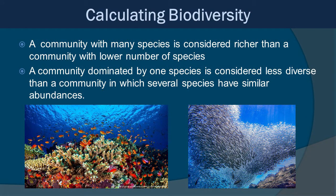A community with many species is considered richer than a community with a lower number of species. Also, a community dominated by one species is considered less diverse than a community in which several species have similar abundances. For example, a coral reef on the left has a huge number of species and a decent abundance for each, whereas on the right you see massive schools of sardines in a nearshore area with a mostly sandy, rocky bottom — that one species dominating is lower diversity, even though you have a ton of individuals.